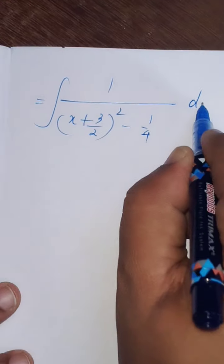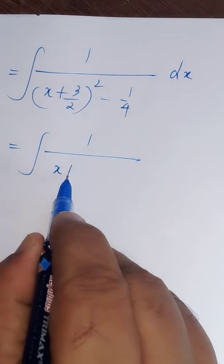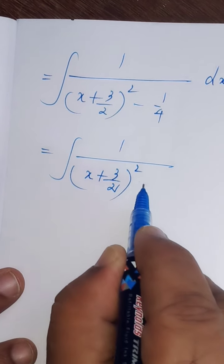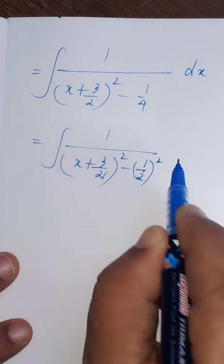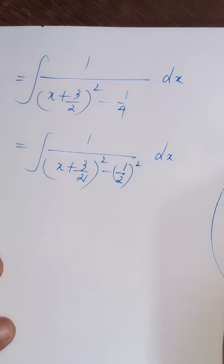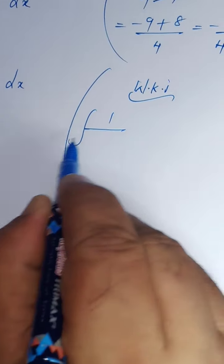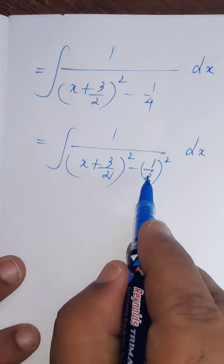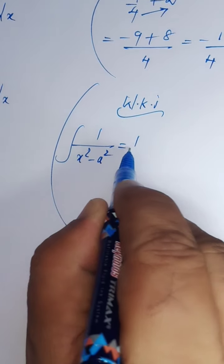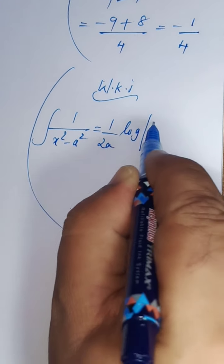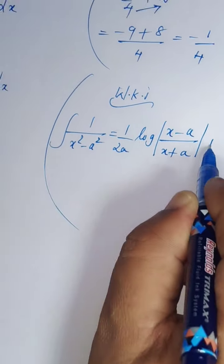Minus 1 by 4 into dx equals integral 1 divided by x plus 3 by 2 the whole square minus 1 by 4 can be written as 1 by 2 the whole square dx. We know that 1 divided by what form it is? X squared minus a squared. X squared minus a squared equals 1 by 2a into log of modulus of x minus a divided by x plus a plus c.